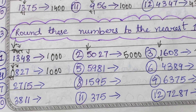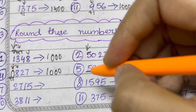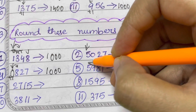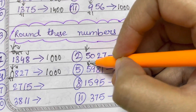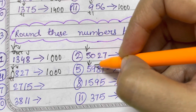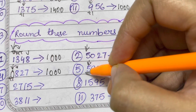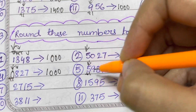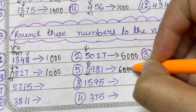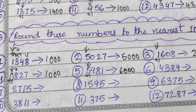So you have 1, and the rest of the digits are 0, so it's 1,000. Next, 5,981. The thousands place is 5, and after that it's 9, which is more than 5. So you add plus 1 to 5, and that's just 6,000.